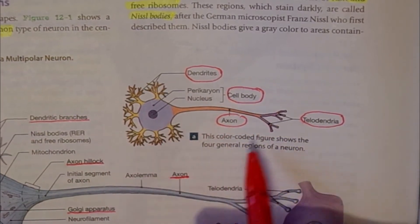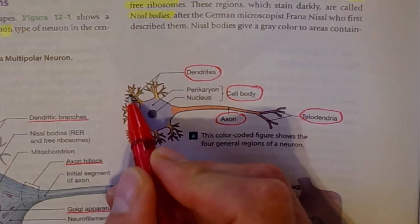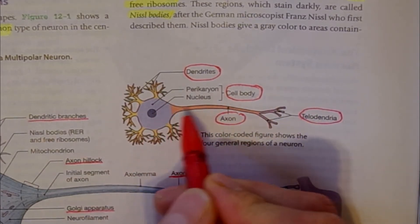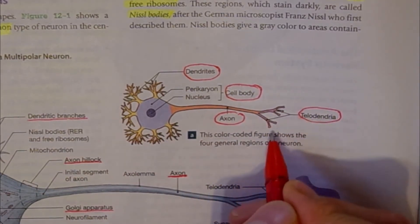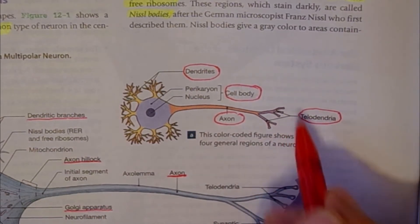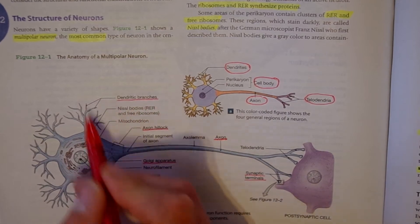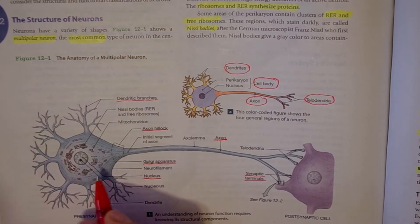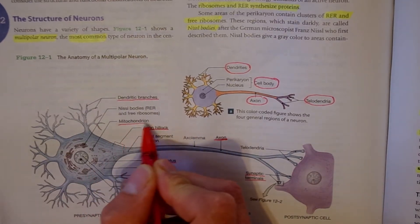Here we can see a color-coded diagram that shows the different regions of a neuron. In yellow we have our dendrites, the blue area is our cell body, and here we have our axon. At the end of the axons we've got the telodendria which contains the synaptic terminals. A neuron contains a nucleus and also certain organelles such as our Golgi apparatus and mitochondria.